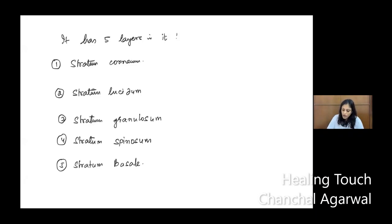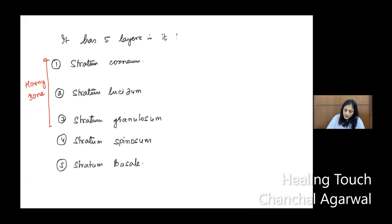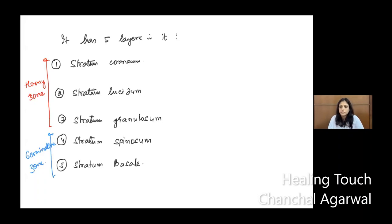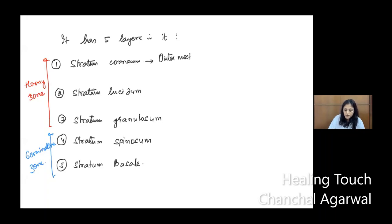Of these five layers, the first three layers — Stratum Corneum, Stratum Lucidum, and Stratum Granulosum — are also called the Horny Zone. The next two layers — Stratum Spinosum and Stratum Basale — are considered the Germinative Zone. The Horny Zone layers are called horny because they are actually dead tissue; the outermost Stratum Corneum is shed off. The lower zone is called Germinative because it germinates and new layers develop. Stratum Corneum is the outermost layer — it is dead and ready to shed off, and has no nucleus.